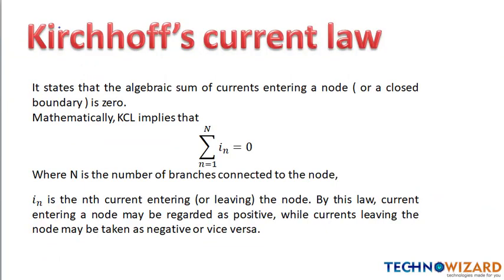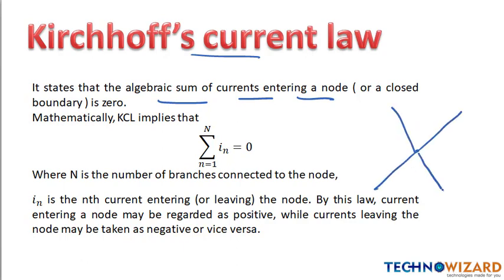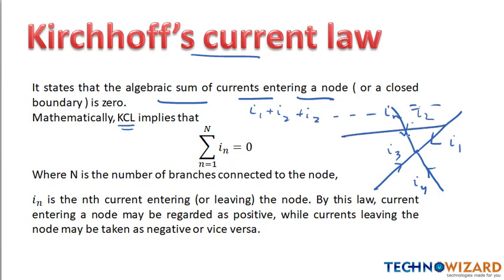First of all we will see KCL, that is Kirchhoff's Current Law. It states that the algebraic sum of currents entering a node is zero. Suppose this is my node and these are the branches attached to this node. The sum of currents entering or leaving the node will be equal to zero. Mathematically, we can say summation from n=1 to N of I_n is equal to zero, where n is the number of branches connected to the node and I_n is the nth current entering or leaving the node.